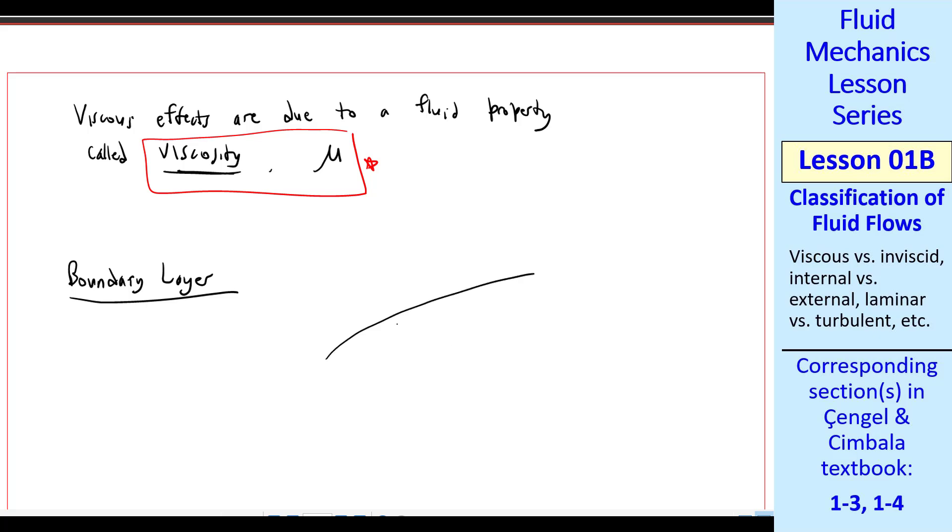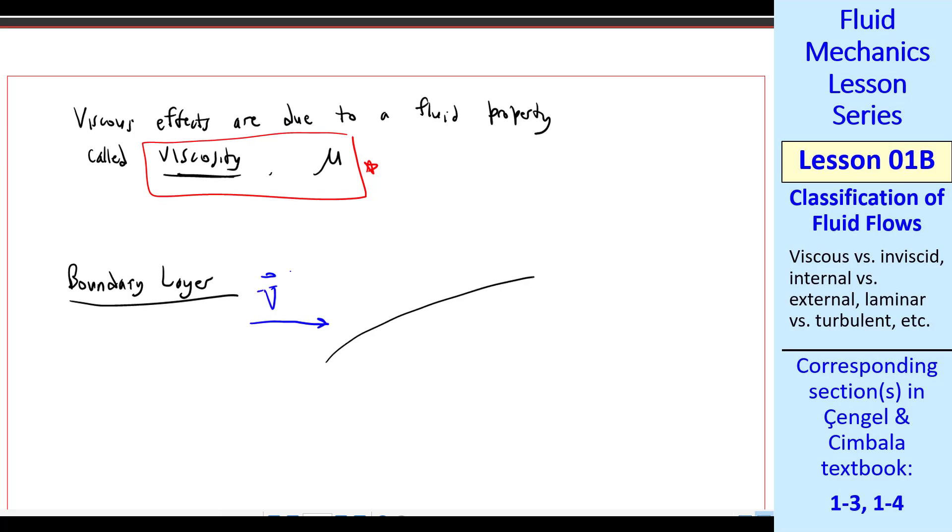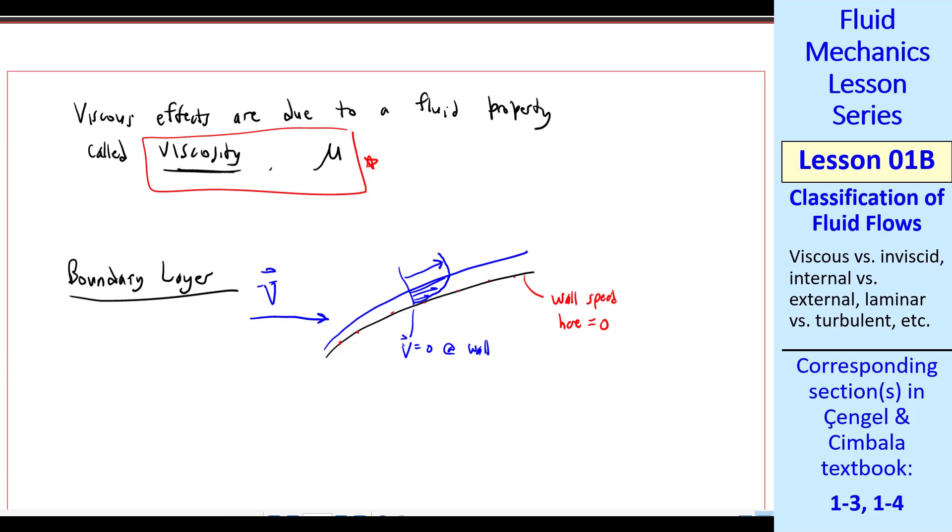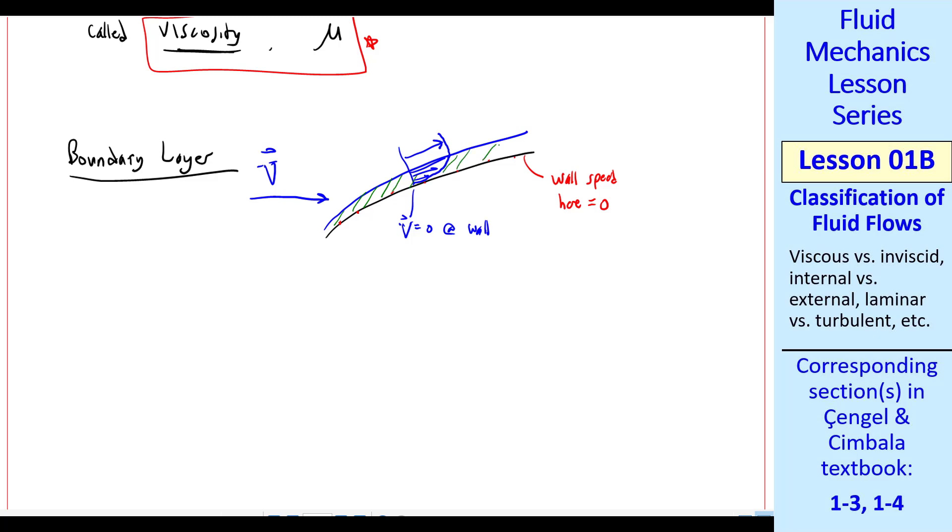I want to define now something called a boundary layer, which will be very important in fluid mechanics. If you have some kind of a flow, say the hood of our car in a wind tunnel, and you have some speed hitting it, as we've said before, anywhere along this wall, the speed has to equal the speed of the wall. The wall speed here is zero. What happens is you get a thin layer of viscous fluid, which is called a boundary layer. Velocity very rapidly goes from zero to whatever speed is out here. And by the no-slip condition, the velocity has to be zero at the wall.